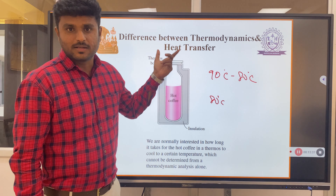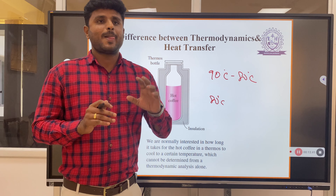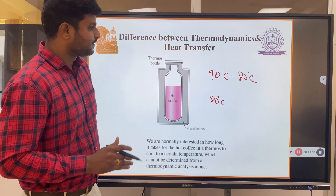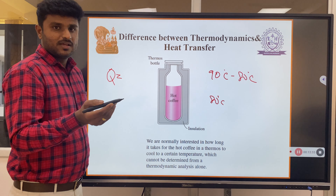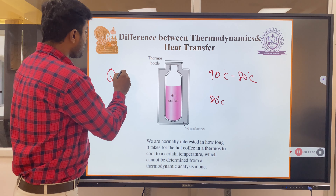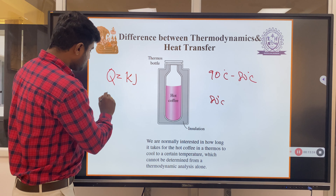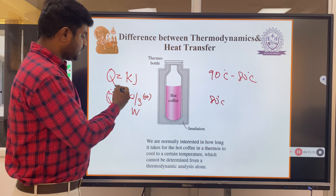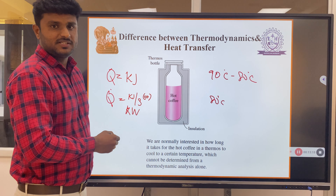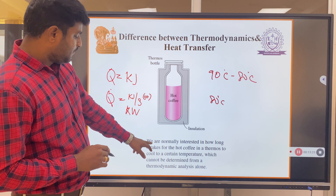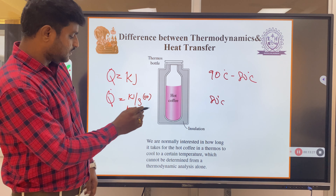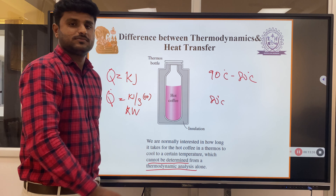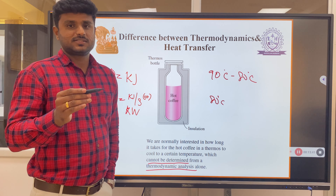The rate of heat transfer can be understood and studied with the help of heat transfer. That is the primary difference between thermodynamics and heat transfer. In simple words: thermodynamics talks about the amount of heat transfer, whereas heat transfer talks about the rate of heat transfer. The amount of heat transfer Q has units of kilojoules, whereas the rate has units of kilojoules per second or watts. We are normally interested in how long it takes for the hot coffee in a thermos to cool to a certain temperature, which cannot be determined by thermodynamic analysis alone. That is why we need to take a detailed study on heat transfer.